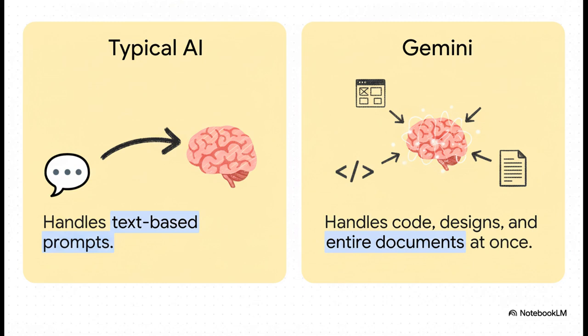It can look at your code, a screenshot of your design from Figma, and a massive project brief all at the same time. It actually gets how a tiny change in the code is going to affect the design, and how both of those things relate back to that document. That is where it starts to get really, really powerful.